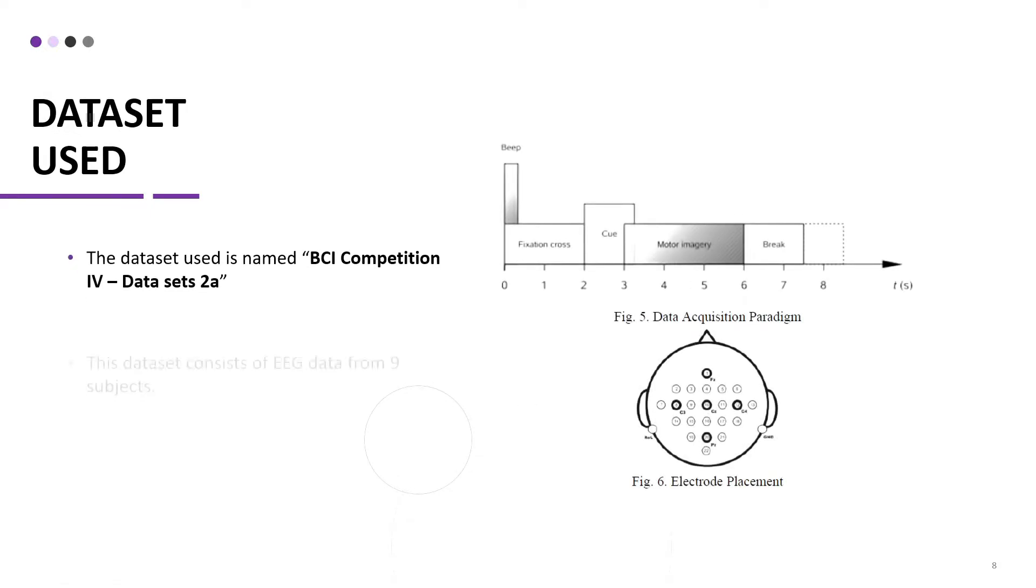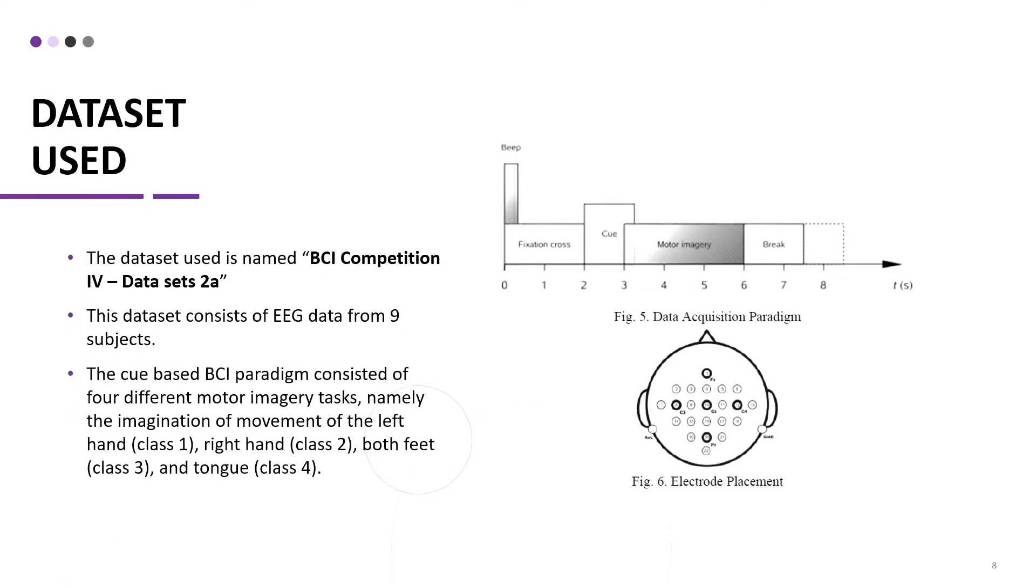The dataset used is BCI Competition 4, which is a commonly known dataset for such applications. The dataset is of 22 electrode readings from 9 subjects. The paradigm at which this data is acquired is shown in figure 5. First, a fixation of cross appears to the subject, providing him or her that a motor imagery task is due. Then a cue appears on the screen telling the subject which motor imagery task he or she has to perform.